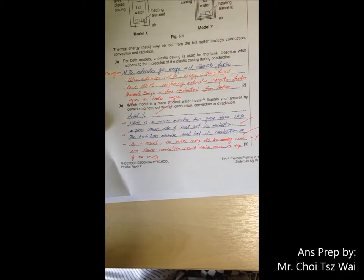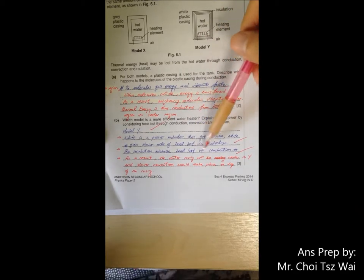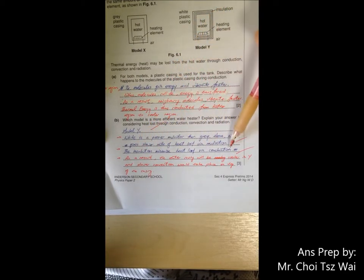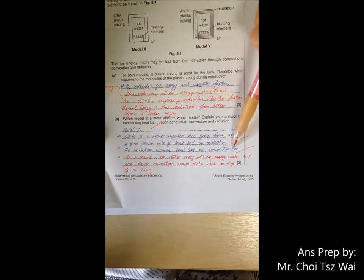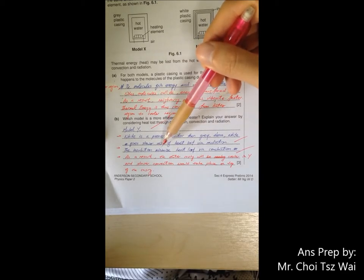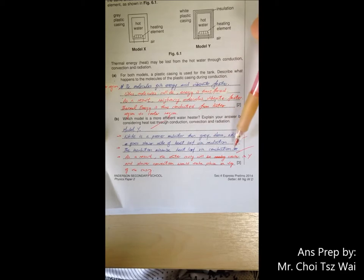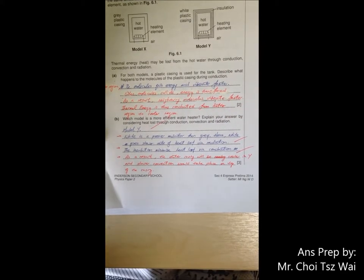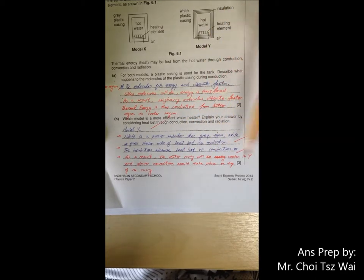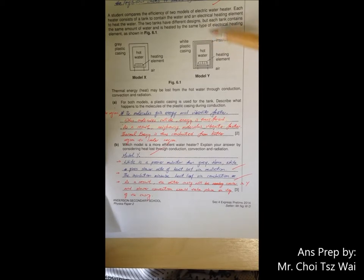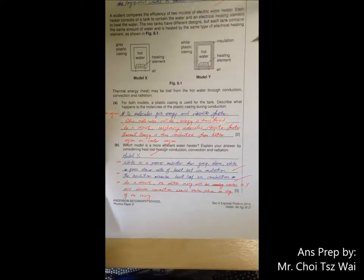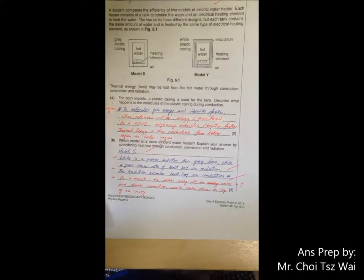The next point. This insulation, this gray color insulation, will minimize heat loss by conduction. I give you a negative example here. If I write just a statement like this, sometimes it could appear unclear to the marker. This insulation, what are you referring to? So a better one would be the insulation in model Y minimizes the heat loss by conduction relative to model X. So that will be a more complete argument. The last point: as a result of the insulation in model Y, the outer casing of model Y will be cooler and therefore the convection current on top of this model Y will be slower than your model X. This is a small point but for complete sake.